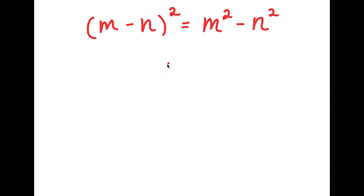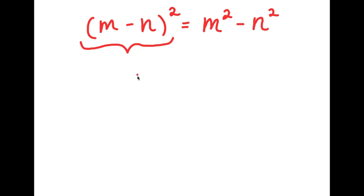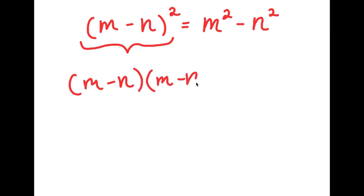So in this problem, I have m minus n squared is equal to m squared minus n squared. To solve this problem, I'm going to first start by rewriting m minus n squared, and I'm going to rewrite this to m minus n times m minus n.